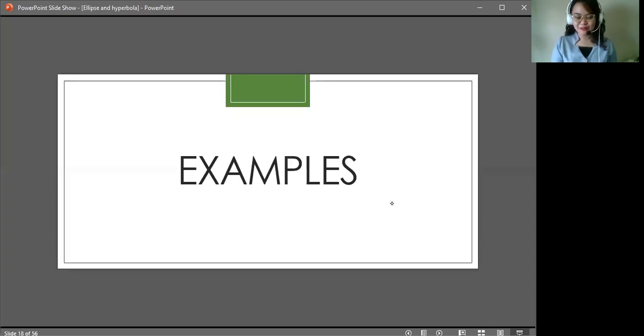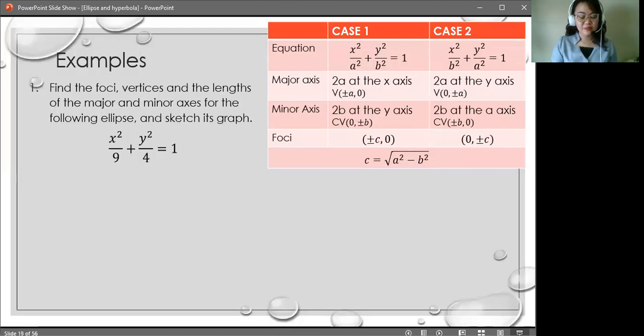Hi! We would now be solving some examples on ellipse. Let's begin with item number 1. Find the foci, vertices, and the lengths of the major and minor axes for the following ellipse, and sketch its graph.